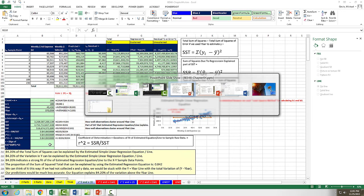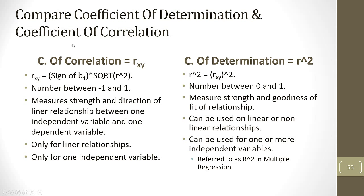Now let's talk about the relationship between coefficient of correlation and coefficient of determination. R (correlation) can be calculated if we know R squared — take the square root of it and assign the sign from our slope. If slope is negative, put a minus in front; if positive, leave it as the square root of R squared. Coefficient of determination: if we know R, we simply square it to get R squared — thus the name R squared.